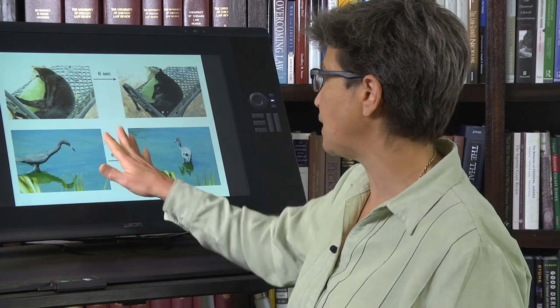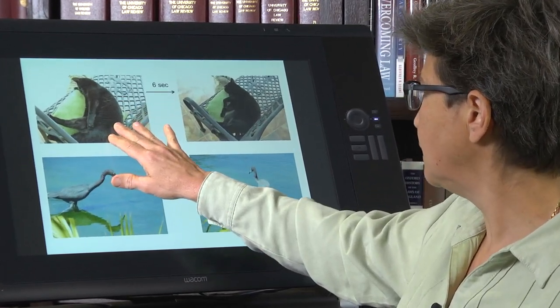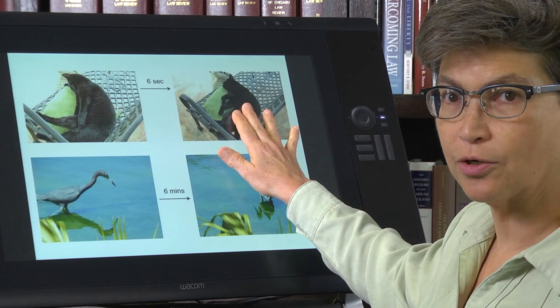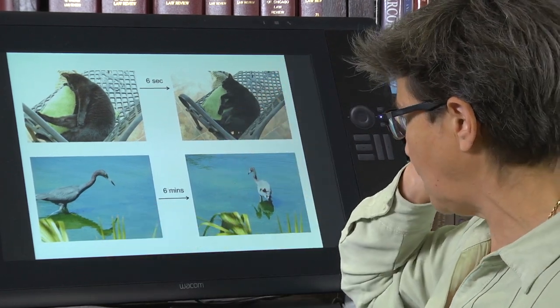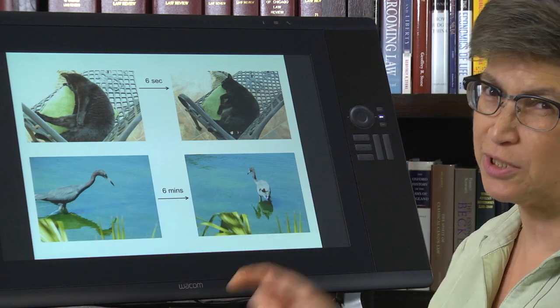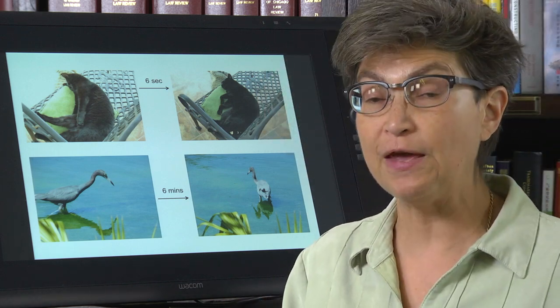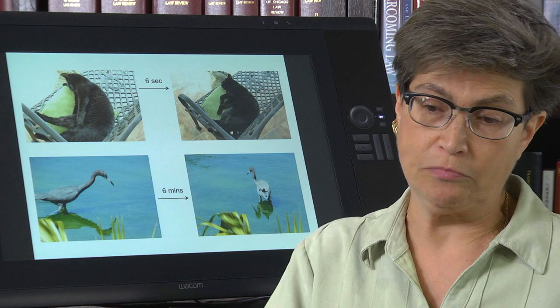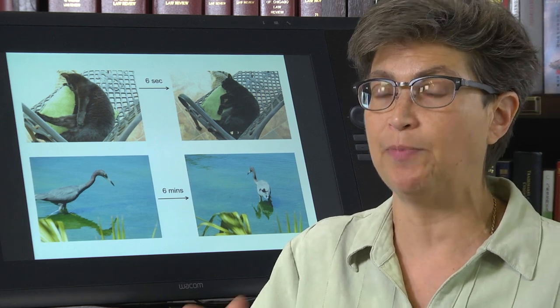This gives rise to what I would call behavioral inertia. Here's behavioral inertia: this is my cat, Minnie — and six seconds later, she's doing the same thing. This is a heron that I watched, and six minutes later it's doing much the same thing. The same action is favored, and so one moment gets stitched to the next by this type of behavioral inertia.